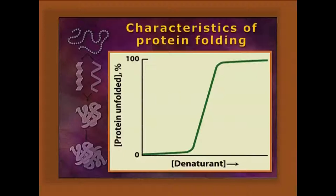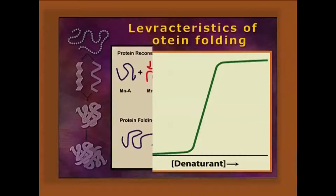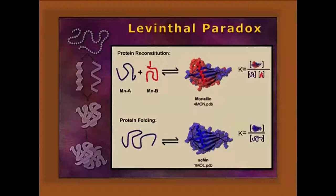Regarding the characteristics of protein folding, from the graph it is known that protein folding is cooperative in nature — a certain jump from folding to unfolding can be followed. The Levinthal paradox is actually the difference between the calculated and actual folding, as well as incorrect intermediates during the course of proper protein folding.